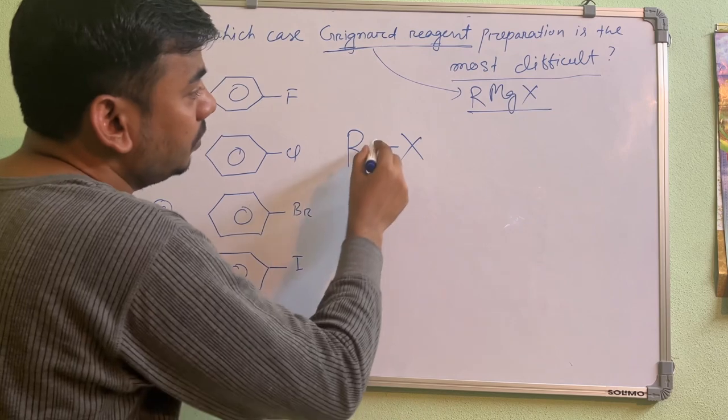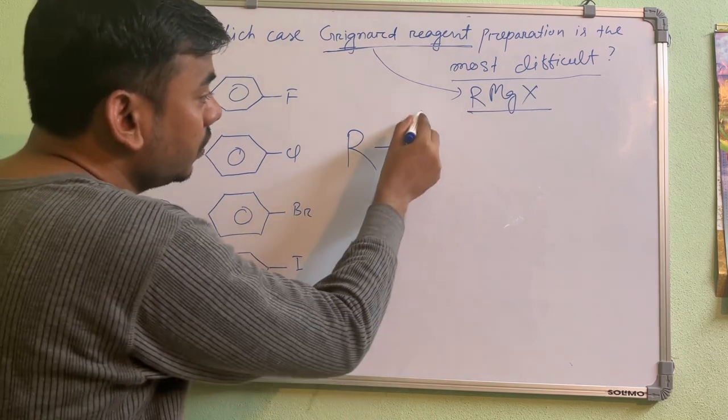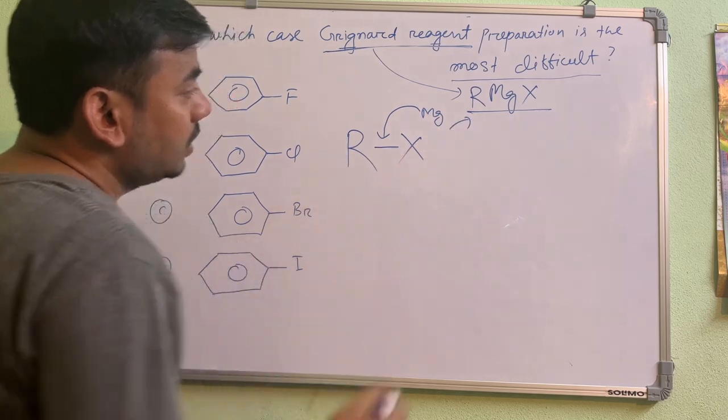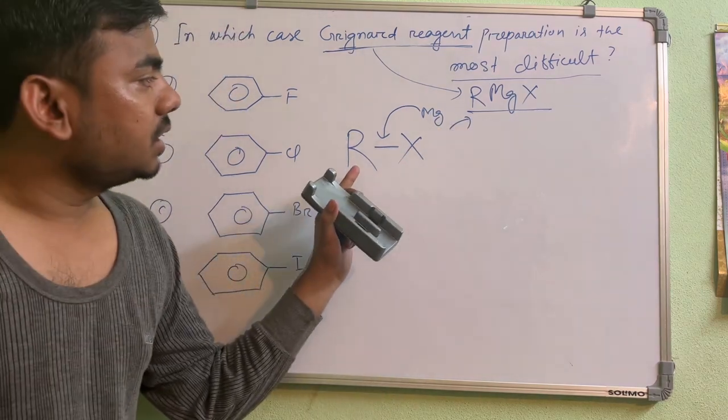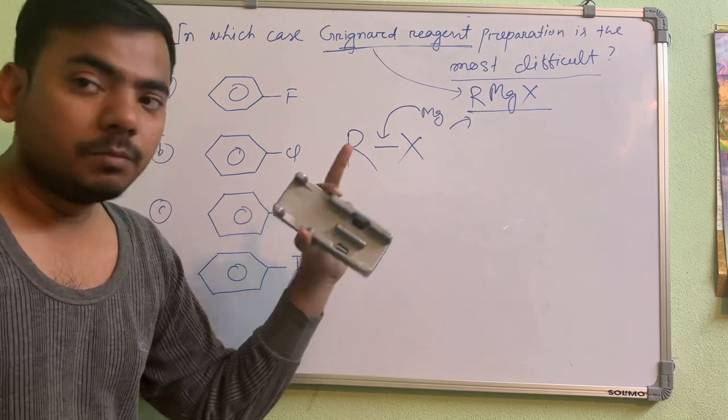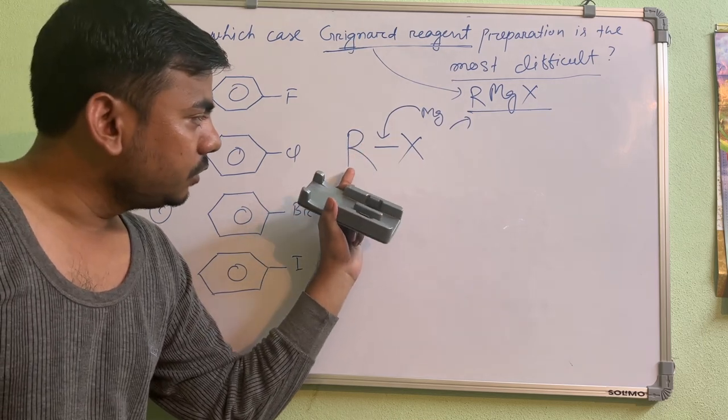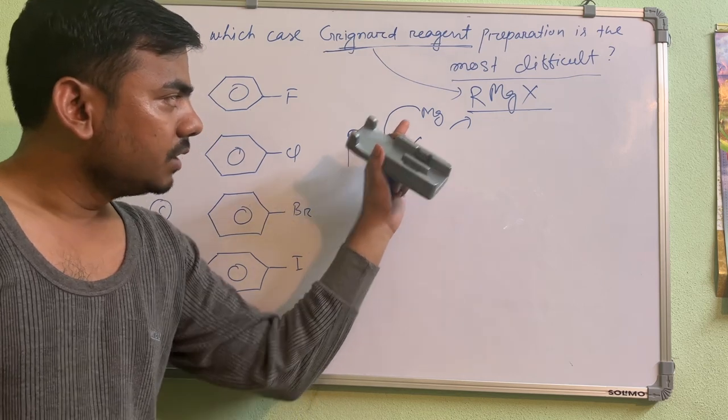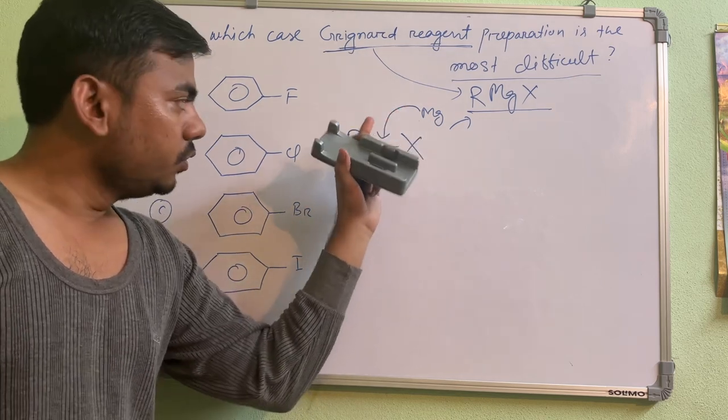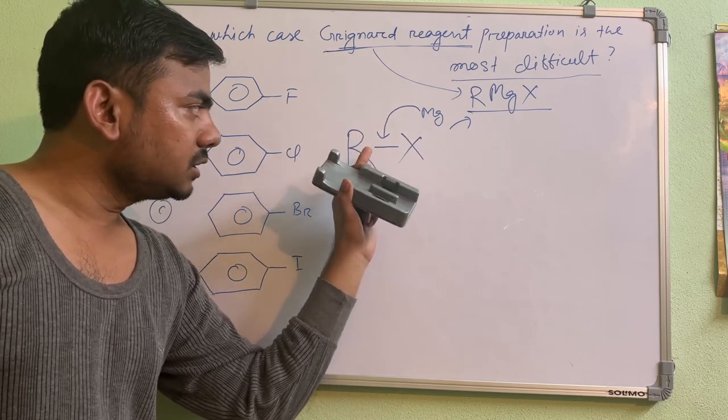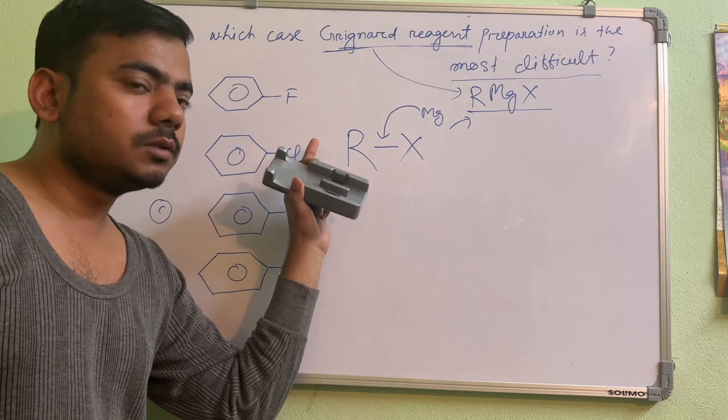So from here to here, how can you get? You have to insert one magnesium. Very easy. But from here only you have to understand why they are asking most difficult. What it means is between R and X already one bond is there. You have to insert magnesium, you need to break this bond. So for breaking this RX bond, in which case the most energy is required - that is your answer.